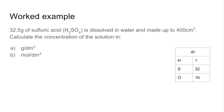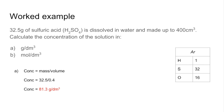We'll look at a typical calculation now. The worked example: a mass of sulfuric acid dissolved in water and made up to 400 cm³. We need to calculate the concentration in (a) g/dm³ and (b) mol/dm³ — relative atomic masses are provided. For part (a), concentration = mass ÷ volume. We must convert 400 cm³ to 0.4 dm³, then 32.5 ÷ 0.4 gives a concentration of 81.3 g/dm³.